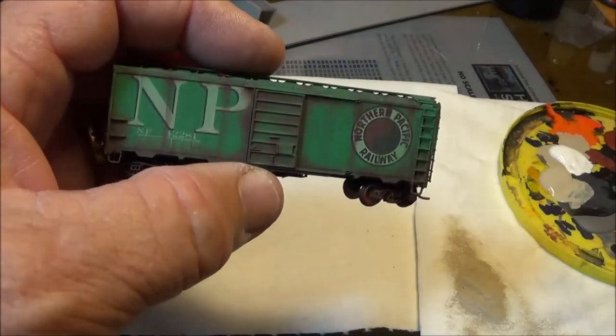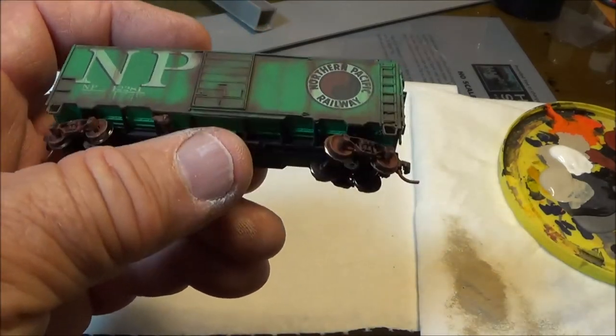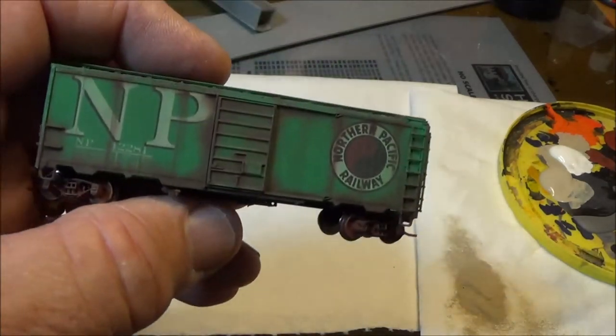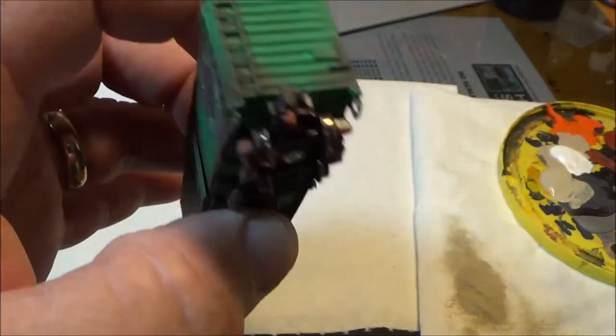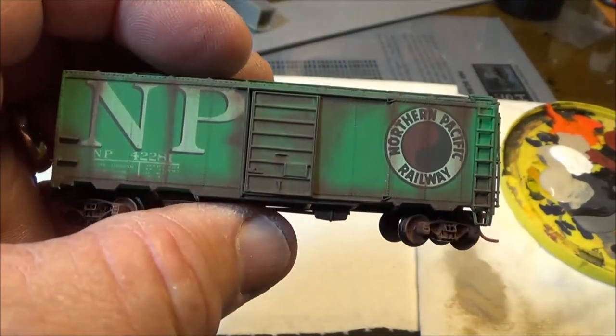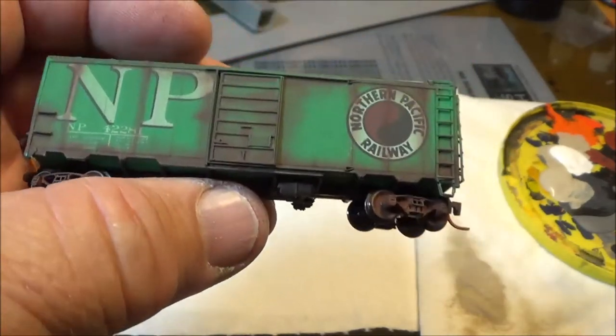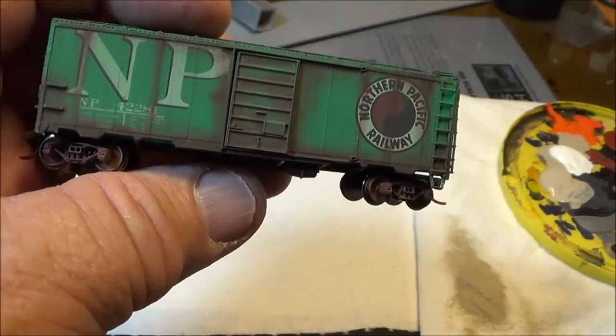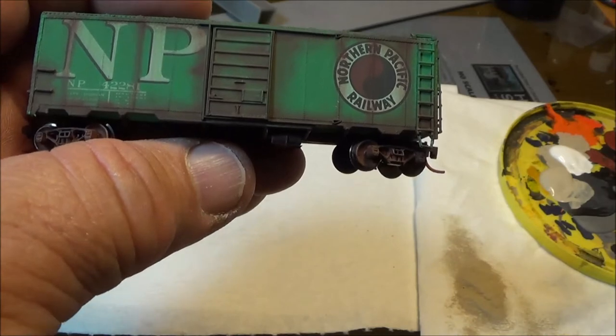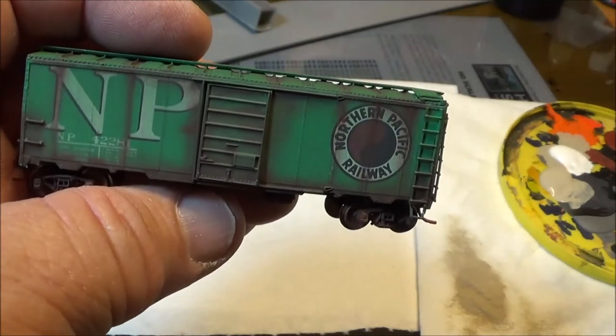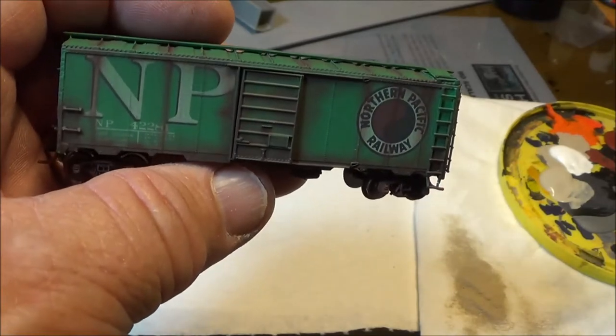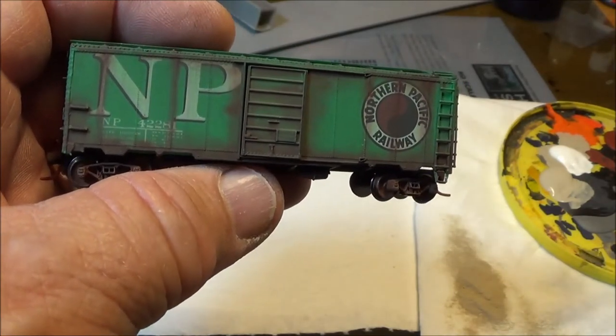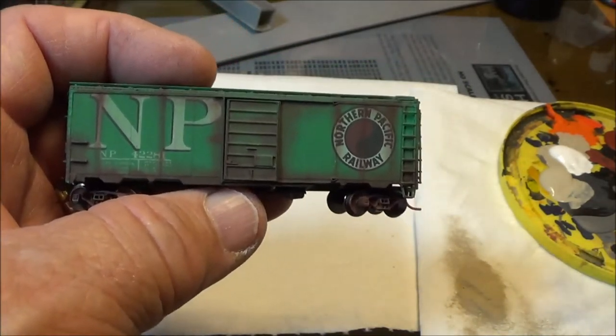Okay, here's a Nickel Plate car that was weathered by Joseph Hudson, our weathering guy. It's a really nice weathering job, but we're going to enhance the look of it just a little bit. And on a car like this, you don't really want to go crazy because you've already got a real nice looking weather job on here. So you're going to be even more careful about doing it extremely lightly.